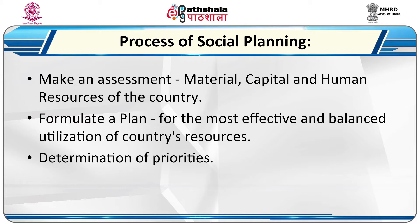The process of social planning involves the following steps: First, make an assessment of material, capital and human resources of the country. Second, formulate a plan for the most effective and balanced utilization of the country's resources. Third, determination of priorities. Fourth, indicate factors and determine the conditions — social, economic and political situations. Fifth, determine the tools and techniques.